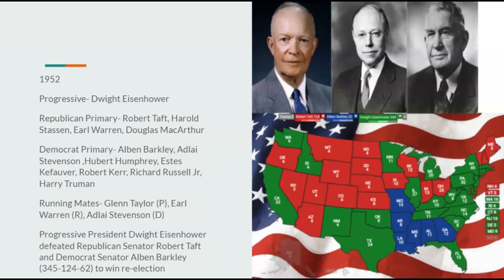Going on to 1952, Eisenhower would win re-election with no health concerns, since he runs four years earlier than in our timeline. He would run against Republican Robert Taft and Democrat Alvin Barkley. Eisenhower was very popular in the South and would defeat Taft and Barkley, 345 to 124 to 62, to win re-election.